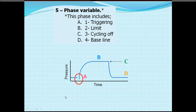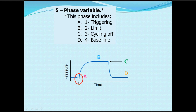The second component is phase variables. We are delivering air from this machine to this patient. The machine is an engineering device, and we must match it with the physiology of the patient. This leads us to divide the inspiratory cycle into different steps. The first step is triggering — when the patient starts to take a breath, changing from expiration to inspiration. We have to let the machine know that the patient is starting to take a breath; this is what we call triggering.